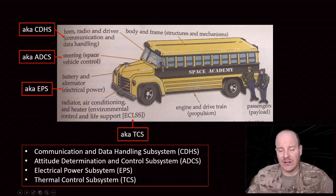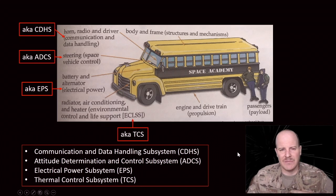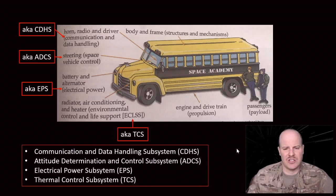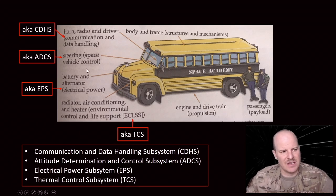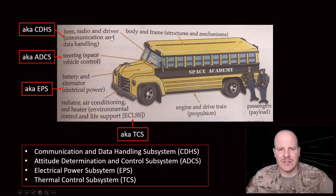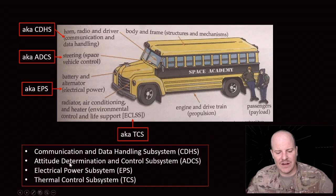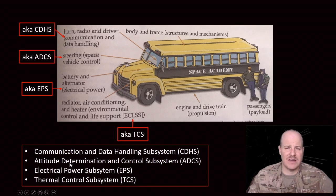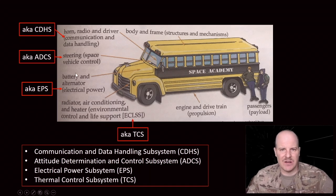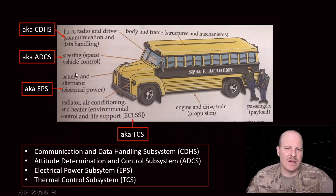We also have a lot of different acronyms with this lesson, so I've put these here explicitly. This lesson, we're not going to necessarily talk about all the pieces and parts that make up each subsystem — we're just going to introduce what these concepts are as a placeholder as we go through the rest of this block. The first is the CDHS, or Command and Data Handling Subsystem, which is akin to the horn, the radio, and the driver for our bus example. The next is the ADCS, or Attitude Determination and Control Subsystem, which is like the steering for our bus — for our spacecraft, it's going to actually steer us and point us in a particular direction.